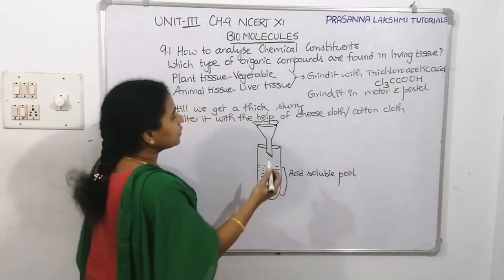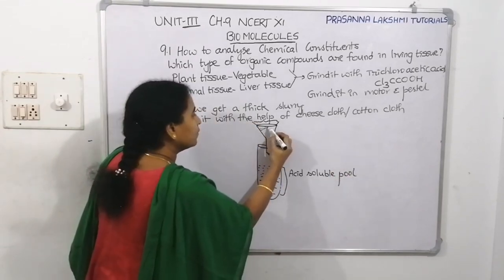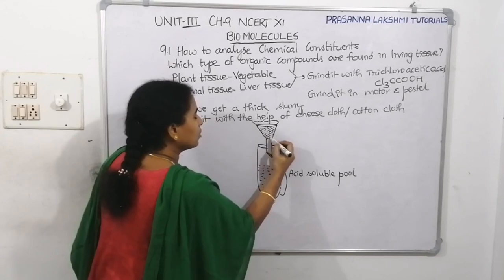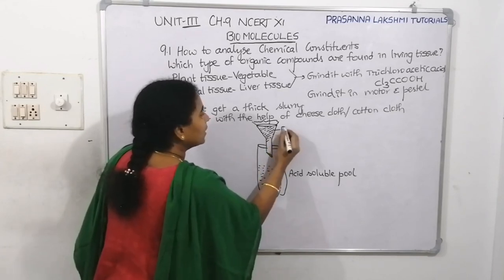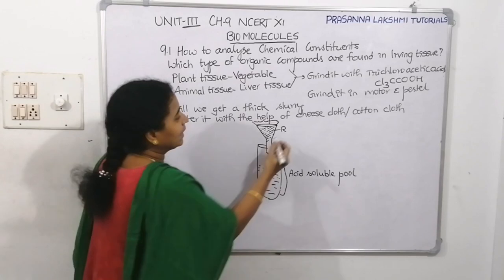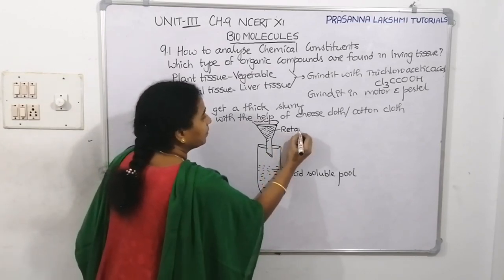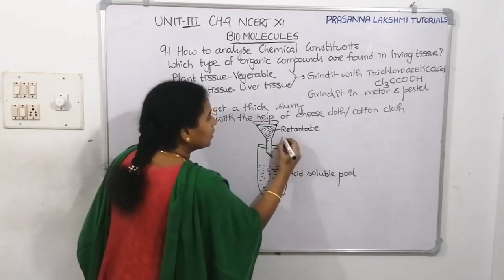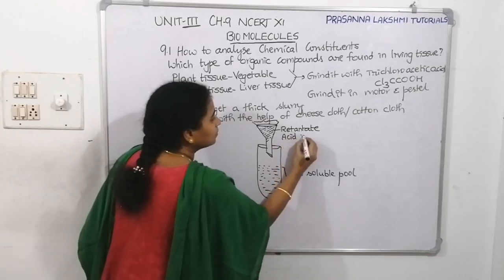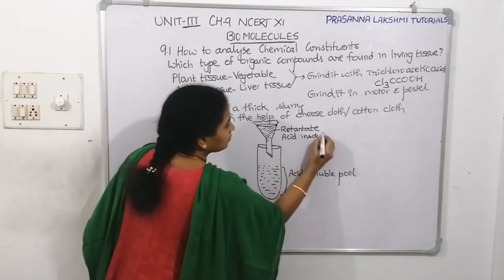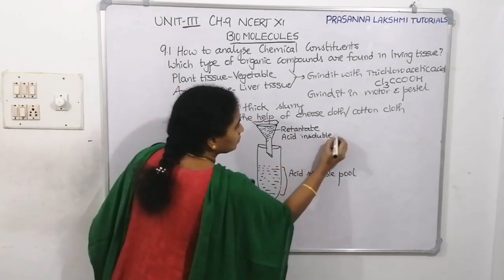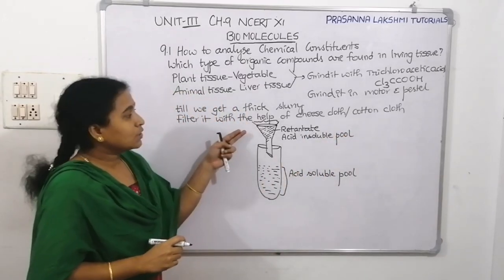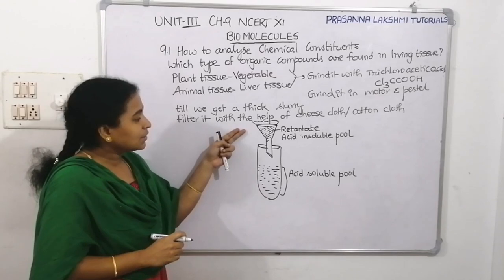The fraction which gets retained in the cloth itself — in the upper portion, not able to come down — is called the retentate, or you can call it the acid insoluble portion. It is not soluble in the trichloroacetic acid, which is why it stays on top.